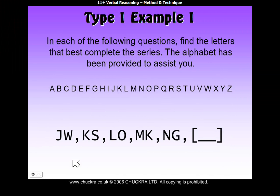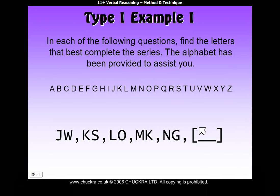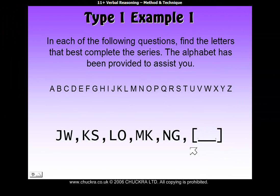Here's our example: JW, KS, LO, MK, and NG. We have to find the missing pair here that best completes this series. There's going to be a pattern within these letters which tells us how we're going to find our answer.